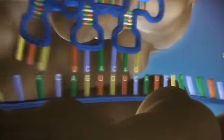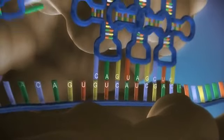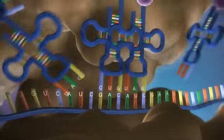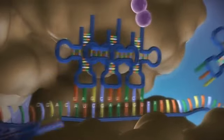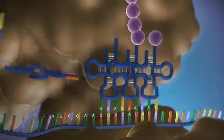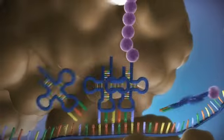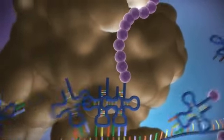The messenger RNA is read three bases at a time. As each triplet is read, a transfer RNA delivers the corresponding amino acid. This is added to a growing chain of amino acids.